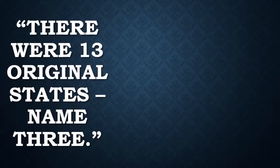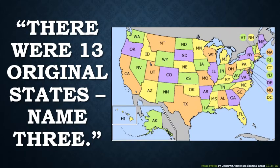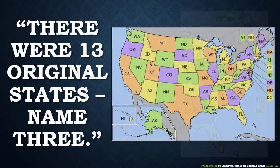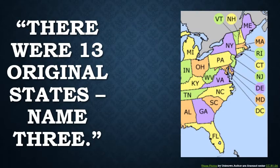While you consider the previous question, here's the next official one: there were 13 original states — name three. Here is a map of all the current states of the United States. Can you name all 50? Pause the video and give it a try if you'd like. If you remember the map from before, much of the Midwest at that time was owned by France and the far west was Spanish, so we can narrow this down to the east coast. That still leaves 23 states — we need to eliminate 10 more.